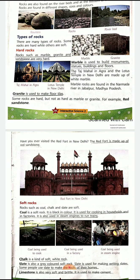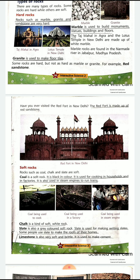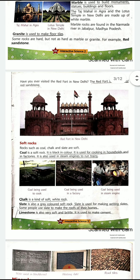Now let's read about soft rocks. Rocks such as coal, chalk, and slate are soft rocks. Coal is a soft rock — it is black in color. It is used for cooking in households and in factories, and also in steam engines to run trains. In villages, people use wood or coal to prepare food and to feel warmth in winter.